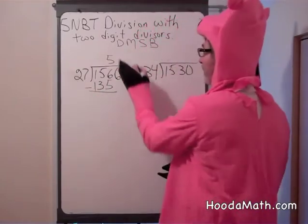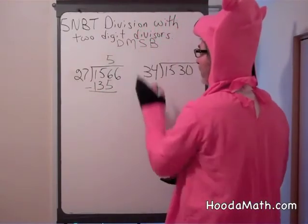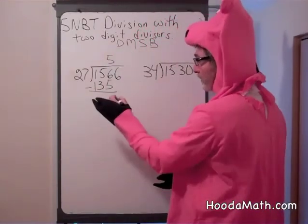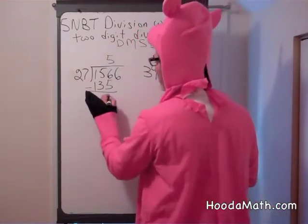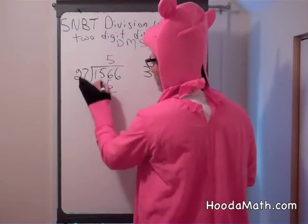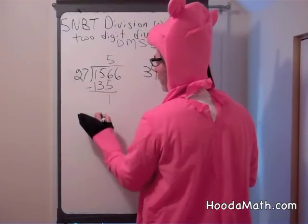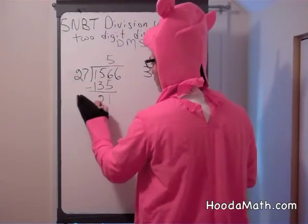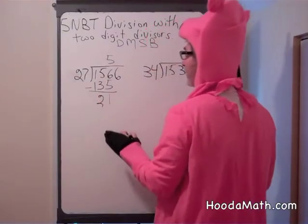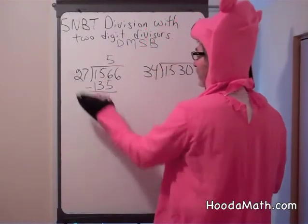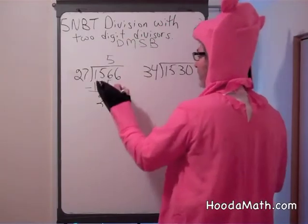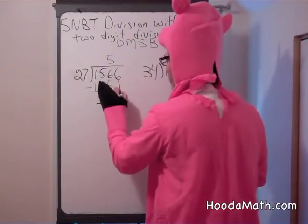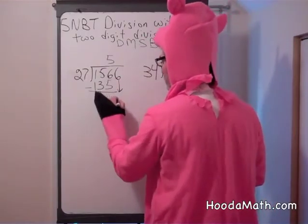Now we've divided, we've multiplied, now we subtract. 6 take away 5 is 1. 5 take away 3 is 2. 1 take away 1 is 0. And then we bring down — we bring down the 6.